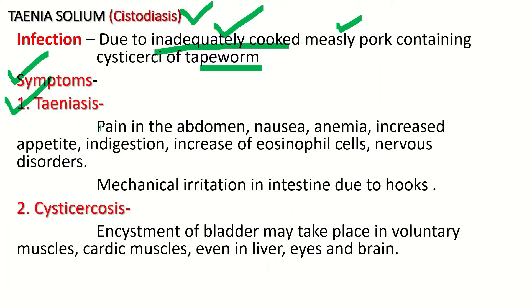There are some common symptoms of Taeniasis: pain in the abdomen, nausea, anemia, increased appetite, indigestion, increase of eosinophilic cells, and some nervous disorders.